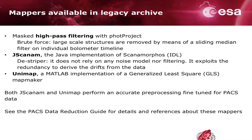The methods available in the Legacy Archive use three different approaches for removing low-frequency noise. High-pass filtering is the simplest method, applying a sliding-median filter on individual timelines while masking sources to avoid source flux loss. The second method, JSCANAM, is the Java implementation of the Scanamorphos code. It is a so-called destriper — it doesn't rely on any noise model or filtering, but exploits data redundancy at all scales to derive and remove drifts.